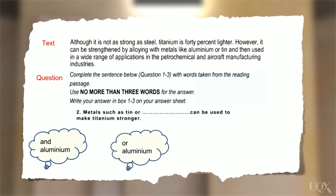Ore aluminium? That's no good. We can't repeat the word ore. What about the last one? Aluminium? Yes, that sounds good. Let's read it out. Metals such as tin or aluminium can be used to make titanium stronger. Does that make sense? Yes. It's a paraphrase of what it says in the text. Does it fit grammatically? Yes. Are there any words being repeated? No. It's great.